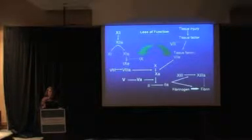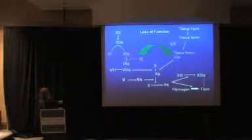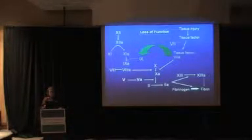In vivo, most of the activation actually happens through tissue factor factor 7 to activate factor 9 over here. And there is a regulator of tissue factor and 7's activity on factor 10 and its tissue factor pathway inhibitor.